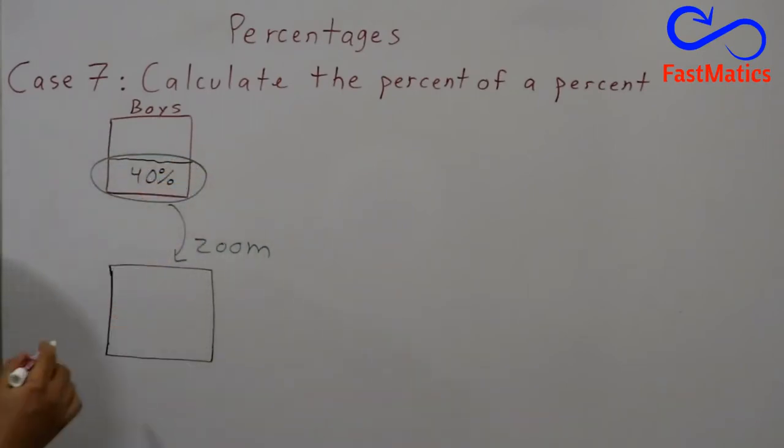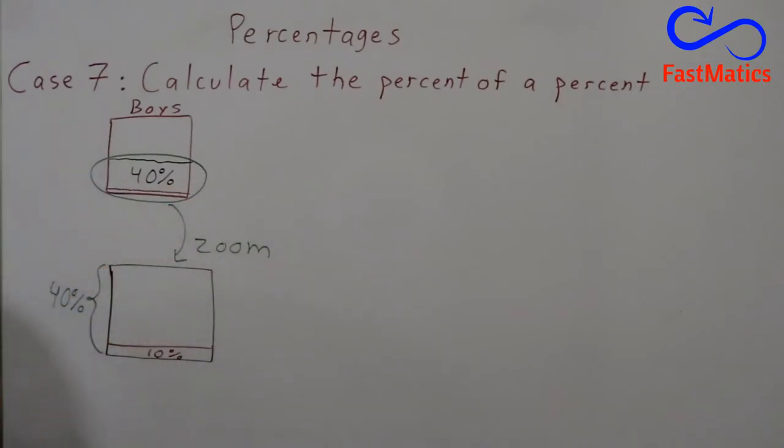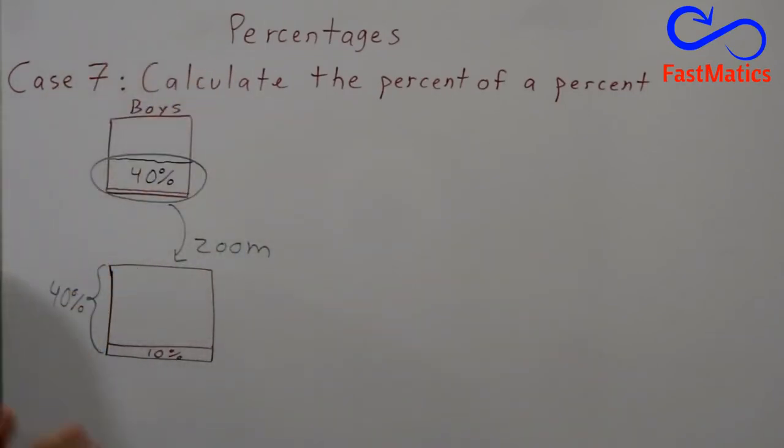And then we see that for every 100 players we are gonna have only 10%, ten percent, that are sixth graders. But the question is: if this square means 40%, this 10% is like almost nothing here. The question is, this 10%, what percent is of the total of boys at Union Middle School?